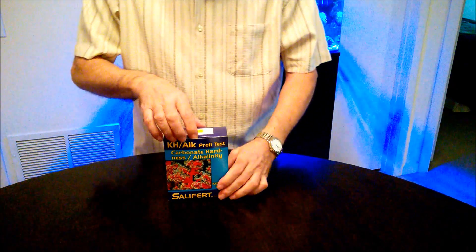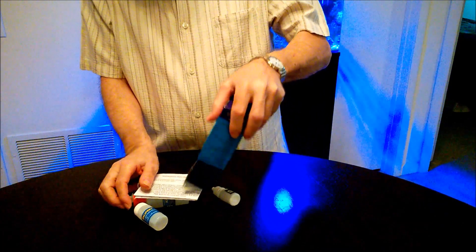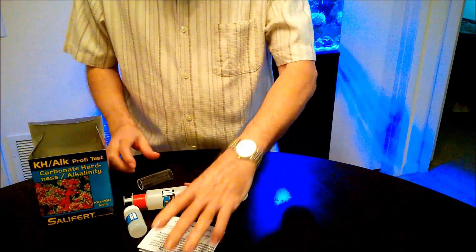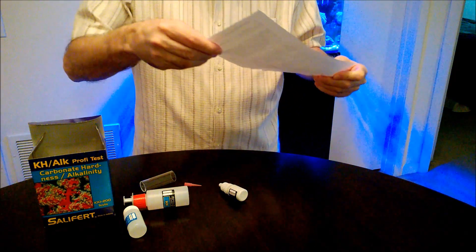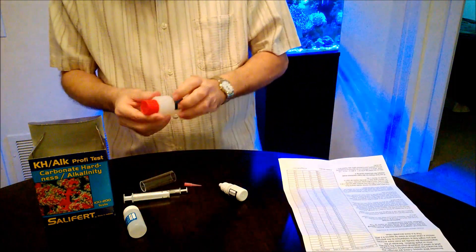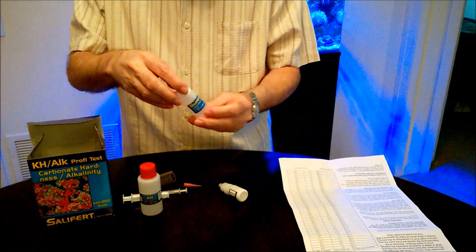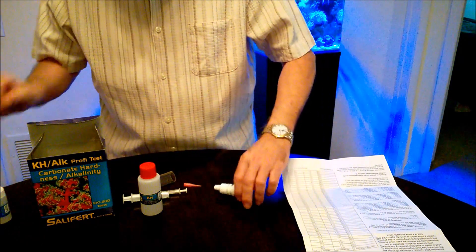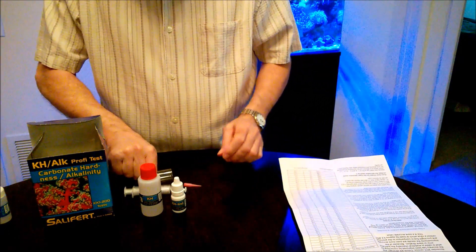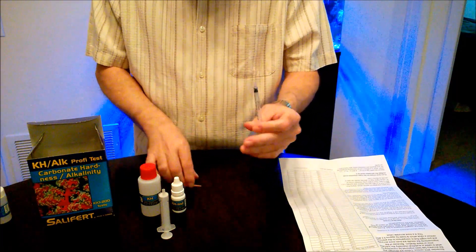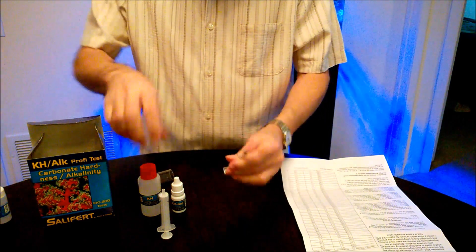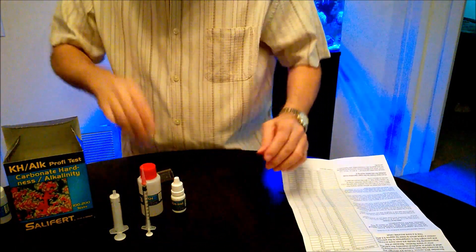So here it is by Salifert. Let's open it up and see what it contains inside. Of course, here we have the instructions, and then we have the KH calibrator. We really don't use it. And then you have the KH-IND indicator. And of course, the 5ml syringe and the 1ml syringe. I'm going to go ahead and add the adapter right now as we speak. And of course, this is the vial.